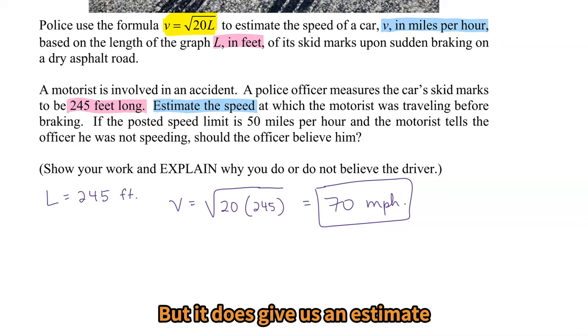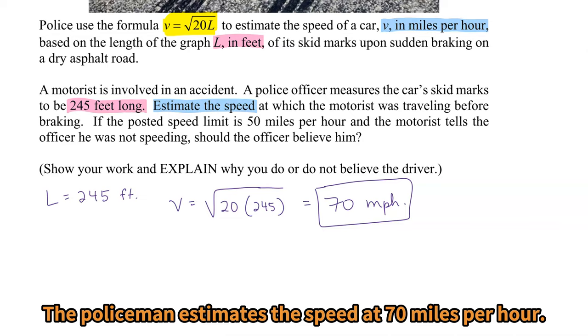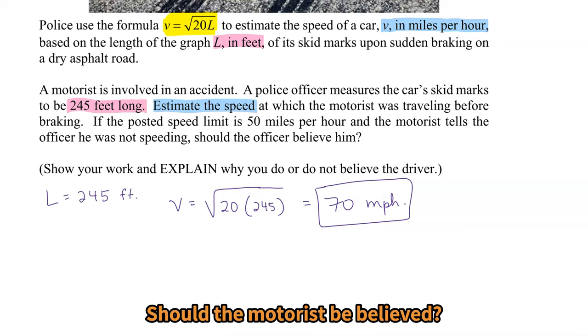Estimate, don't get it exact, just estimate. The policeman estimates the speed at 70 miles per hour, or the motorist says he wasn't speeding. Should the motorist be believed?